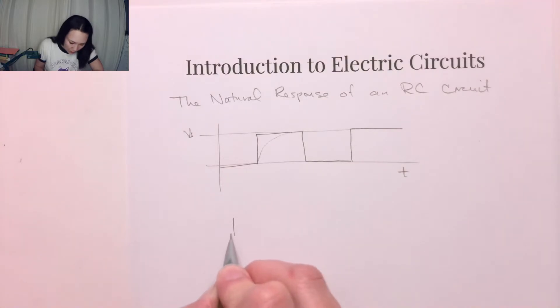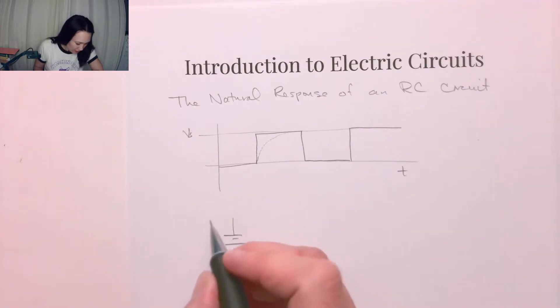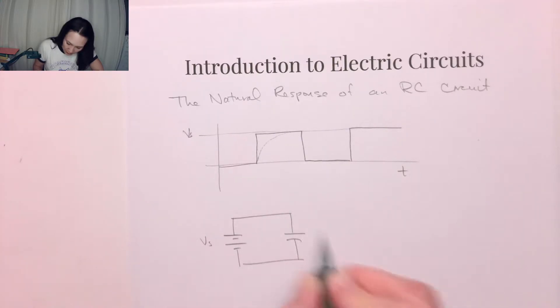Let's look at a physical situation that models what's happening here. Suppose we have this DC source, I'll call this Vs, and this is in parallel with a capacitor in parallel with a resistor. Here's our RC circuit.